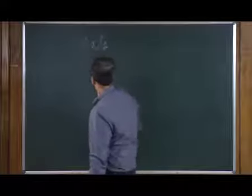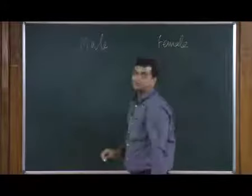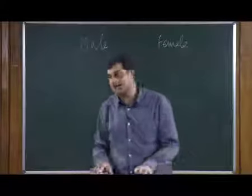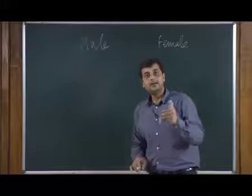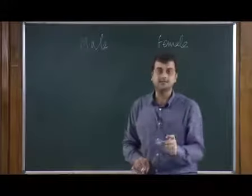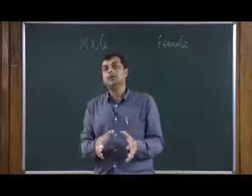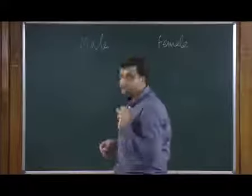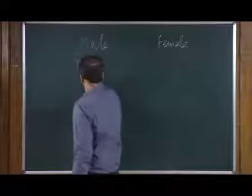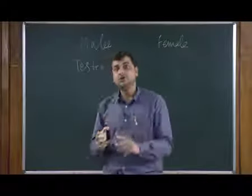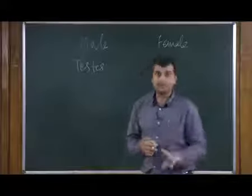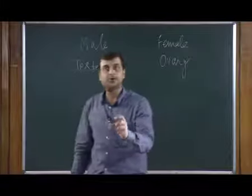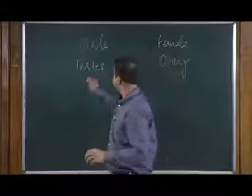We have male and female — these are the 2 distinct sexual kinds of individuals available in the human kingdom. The male and the female have very specific organs, a very specific kind of system available for the reproductive aspect. The organ involved in the male reproductive system is called the testes, and similarly in case of female we have the ovary as a reproductive organ.